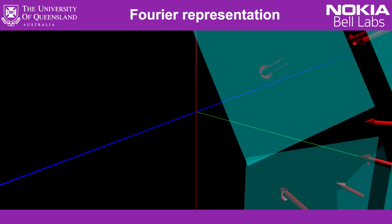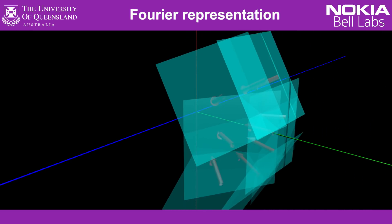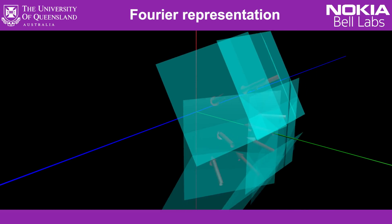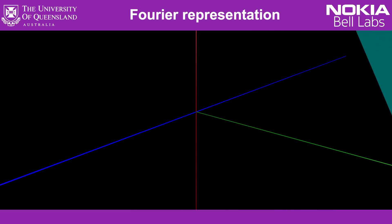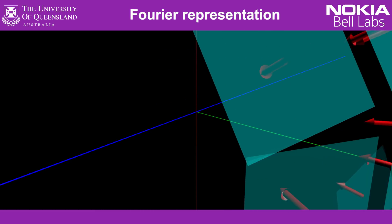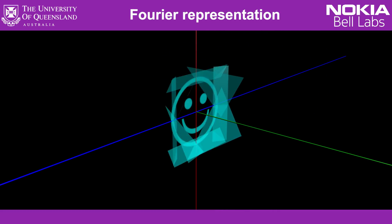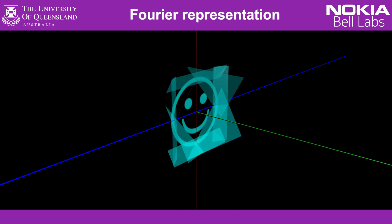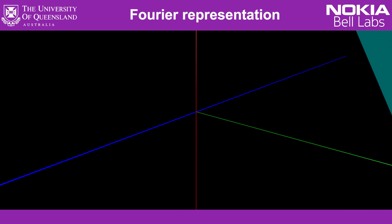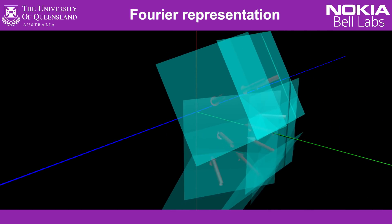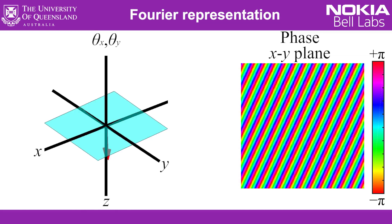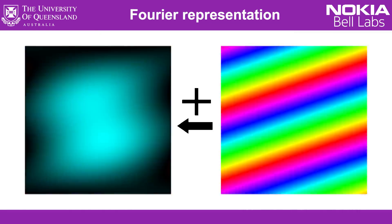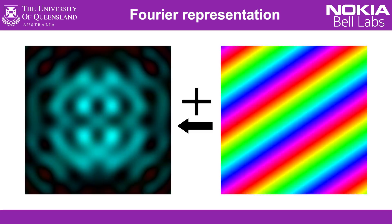Another common way to represent an image, or some other beam of light, is as the summation of lots of different infinitely large flat waves, all travelling at different angles. When these waves interfere in the plane of interest where our image is, some areas get bright, some areas get dark, and together they make our smiley face. Just like with the pixels, the more of these angle components we add together, the better our approximation gets.